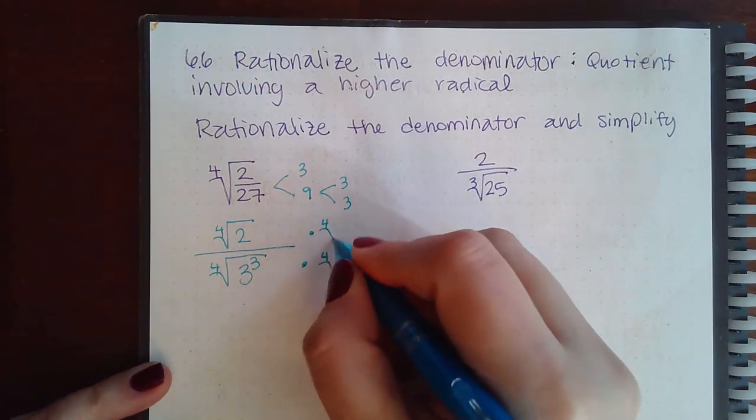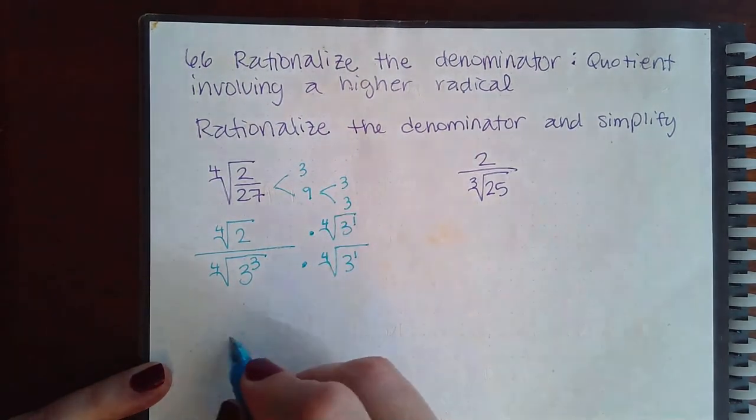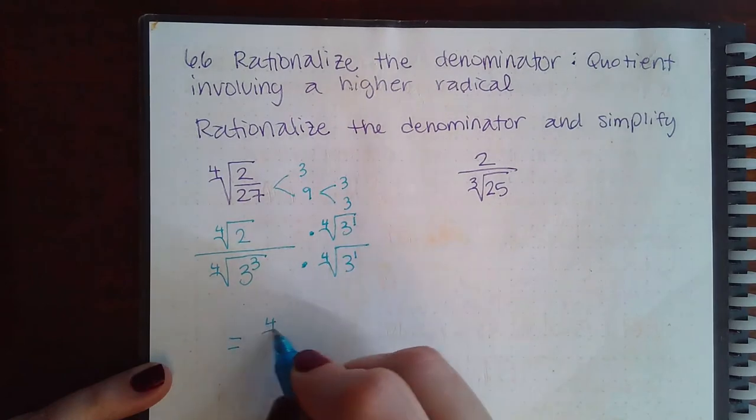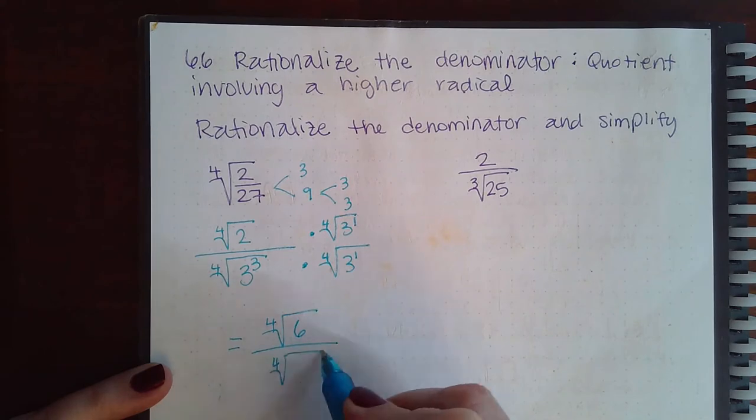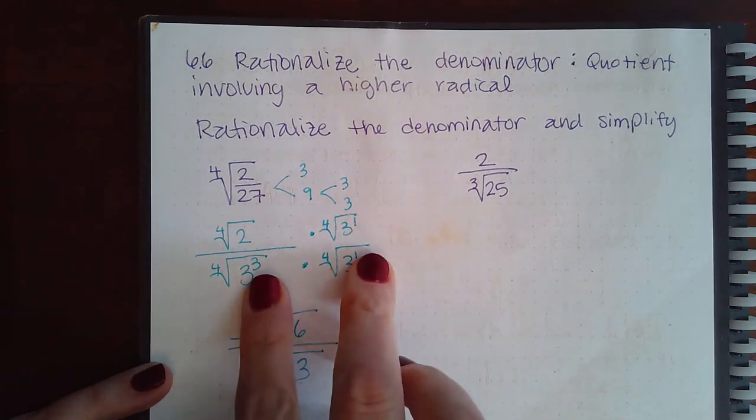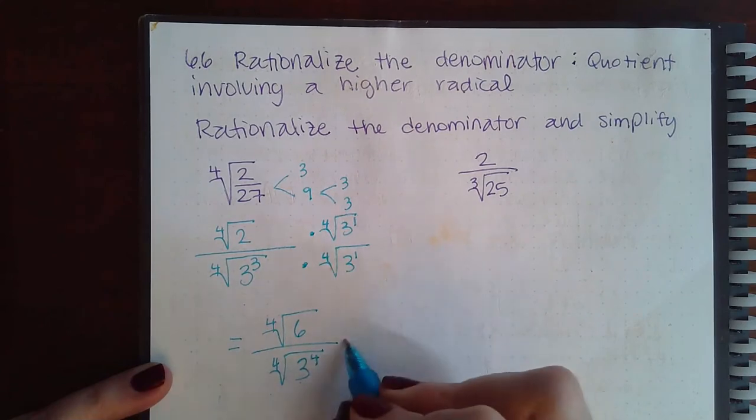So I'm going to multiply those insides together. I get the fourth root of 6. I'm going to multiply these two together but I'm going to use the exponent form, so when you multiply bases the same you add exponents.